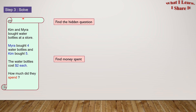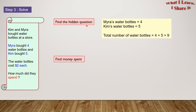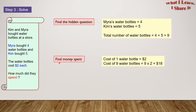Step three: Solve. We will find the hidden question. Myra's water bottles equal four and Kim's water bottles equal five. So the total number of water bottles equals four plus five, which equals nine. Now let's find the money spent. The cost of one water bottle equals two dollars. The cost of nine water bottles equals nine times two, which is $18.